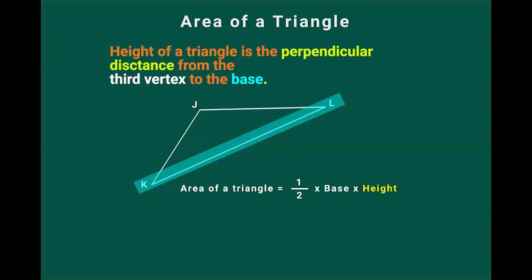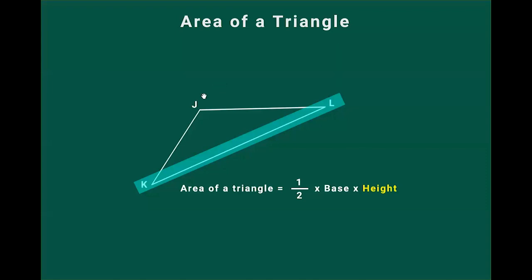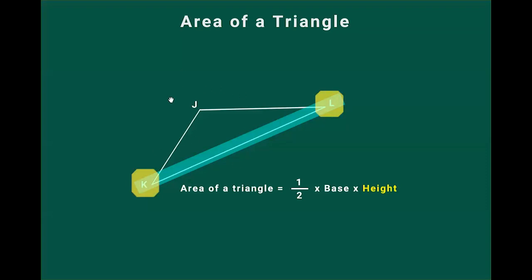Every triangle has three vertices. In this case, we have vertex J, vertex K, and vertex L. Now this base KL has already taken up two vertices, K and L. So the third vertex is J. Which means that if I choose JK as base, then the third vertex will be L. And if I choose JL as base, then the third vertex will be K.